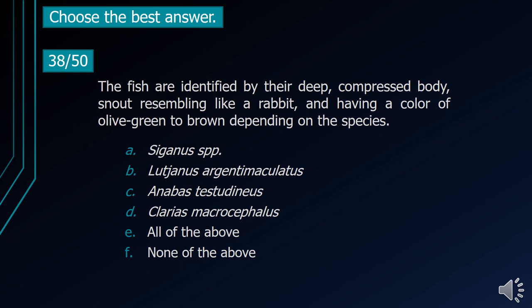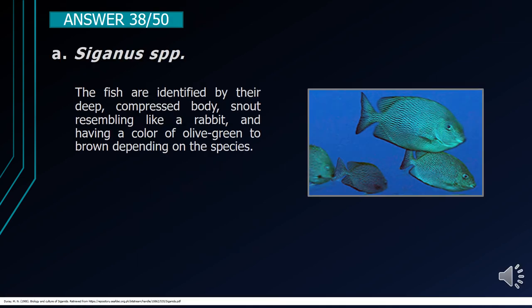Number 38. The fish are identified by their deep, compressed body, snout resembling a rabbit, and having a color of olive green to brown depending on the species. A. Siganus spp. B. Lutjanus argentimaculatus. C. Anabas testudineus. D. Clarias macrocephalus. E. All of the above. F. None of the above. The correct answer is letter A, Siganus spp. The fish are identified by their deep, compressed body, rabbit-like snout, and olive green to brown coloration depending on the species.